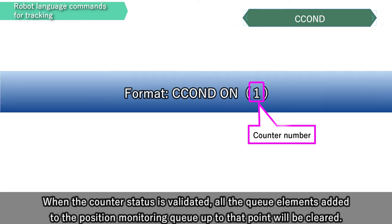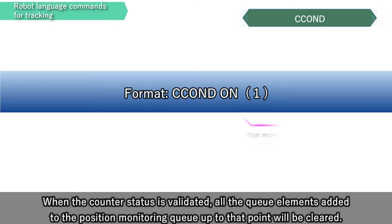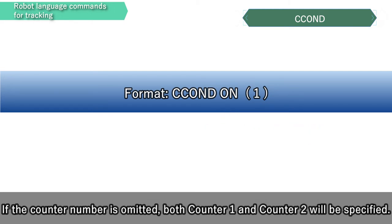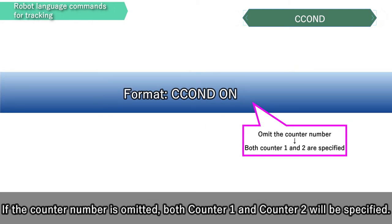When the counter status is validated, all the queue elements added to the position monitor in queue up to that point will be cleared. If the counter number is omitted, both counter 1 and counter 2 will be specified.